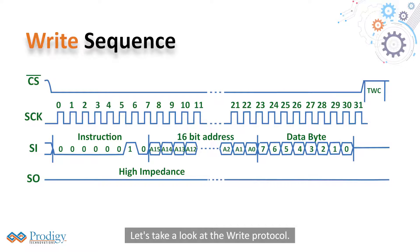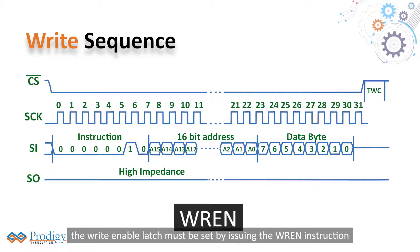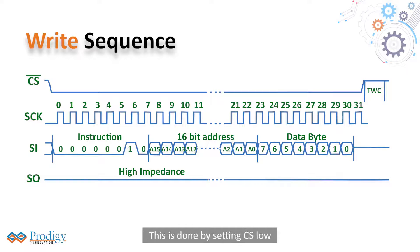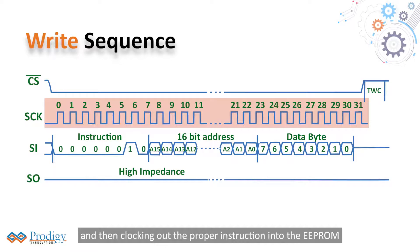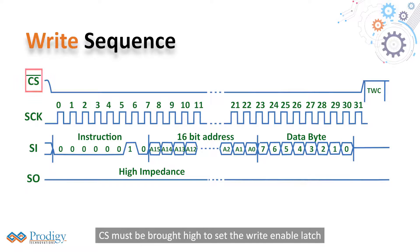Let's take a look at the write protocol. Prior to any attempt to write data to the EEPROM, the write enable latch must be set by issuing the WEN instruction. This is done by setting CS low and then clocking out the proper instruction into the EEPROM. After all 8 bits of the instruction are transmitted, CS must be brought high to set the write enable latch.